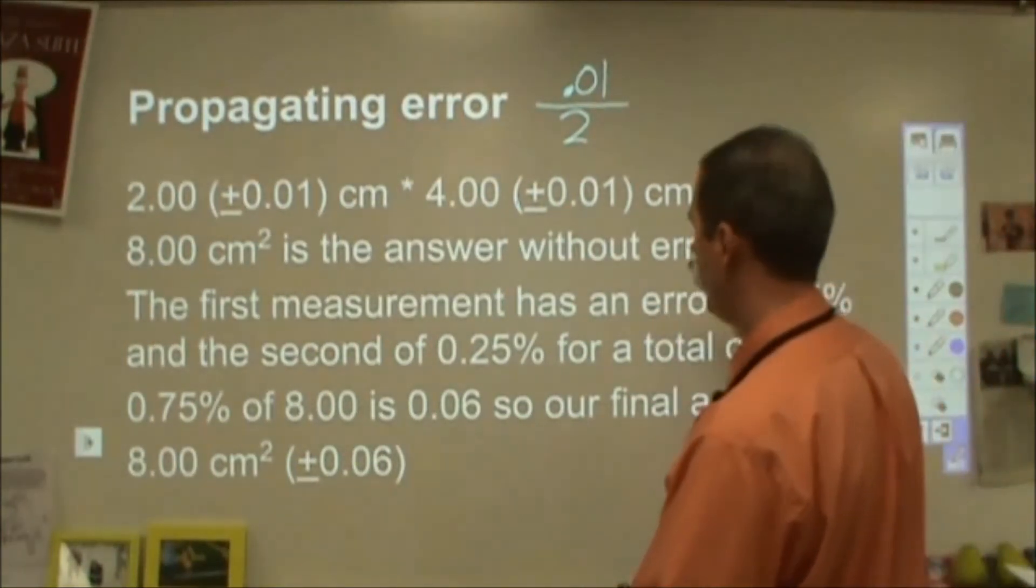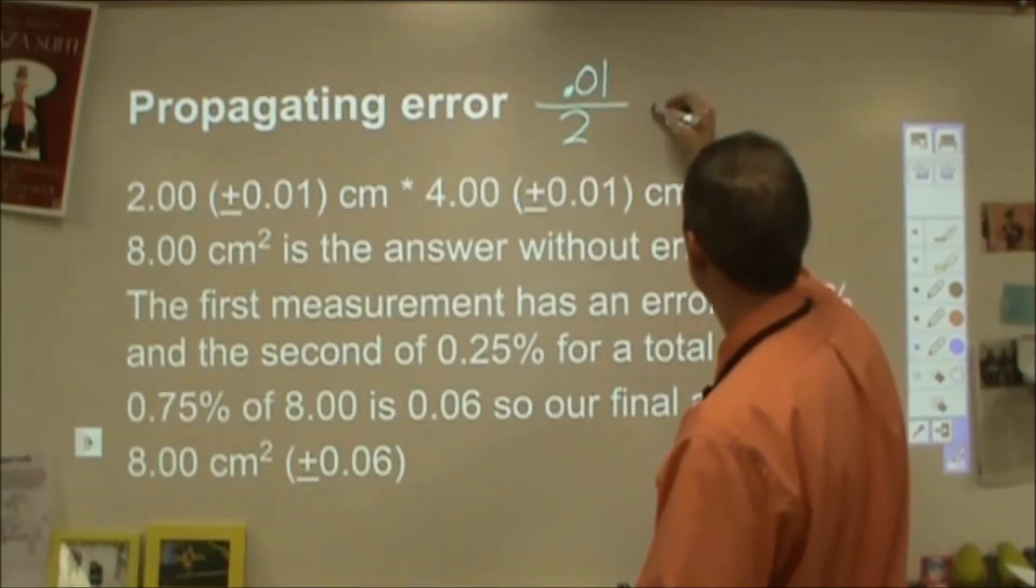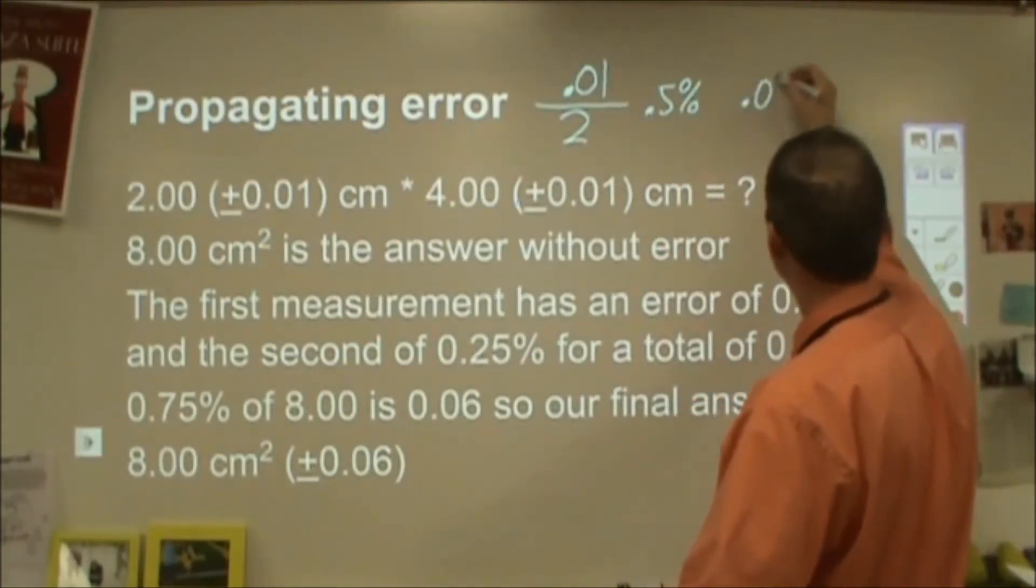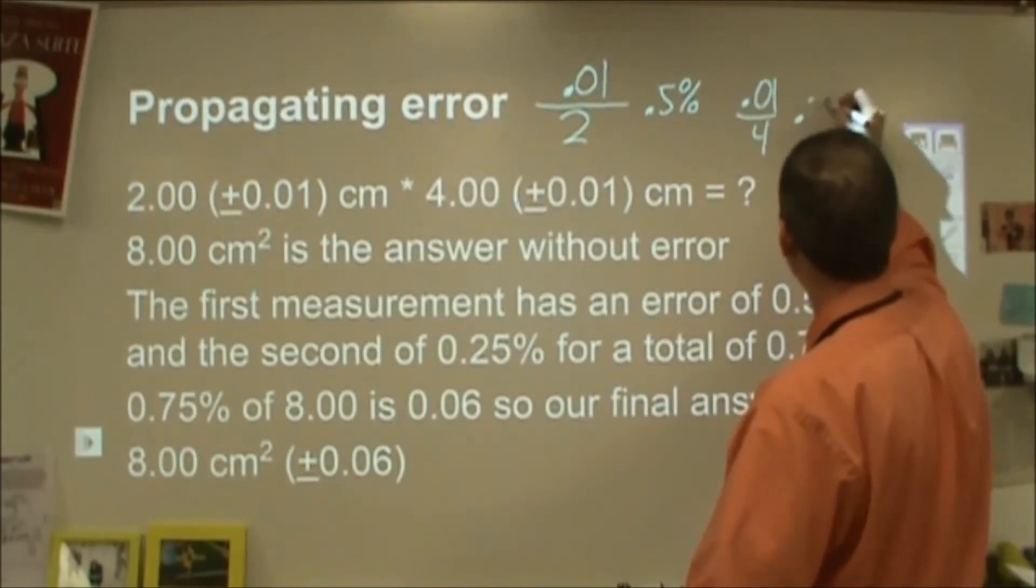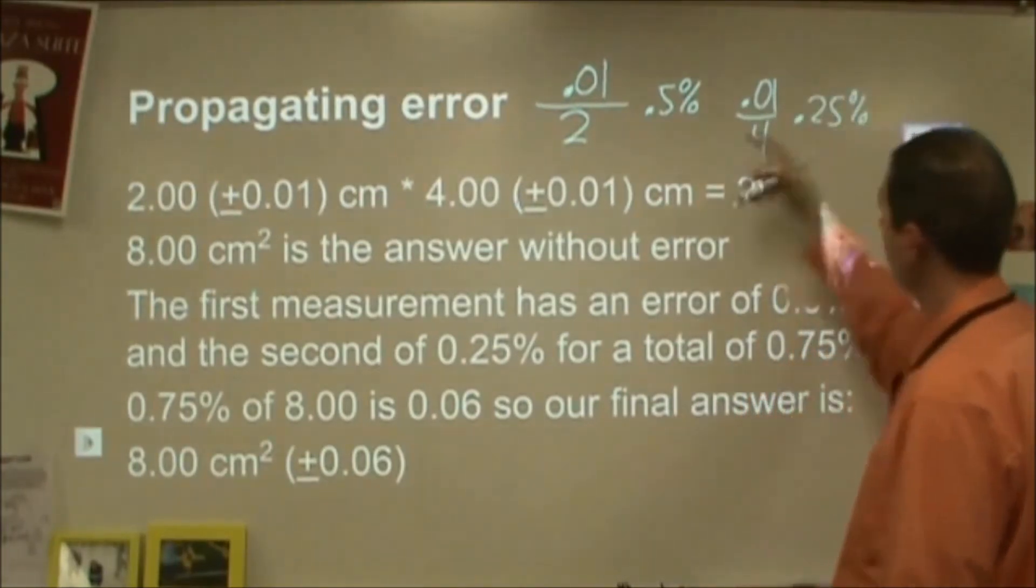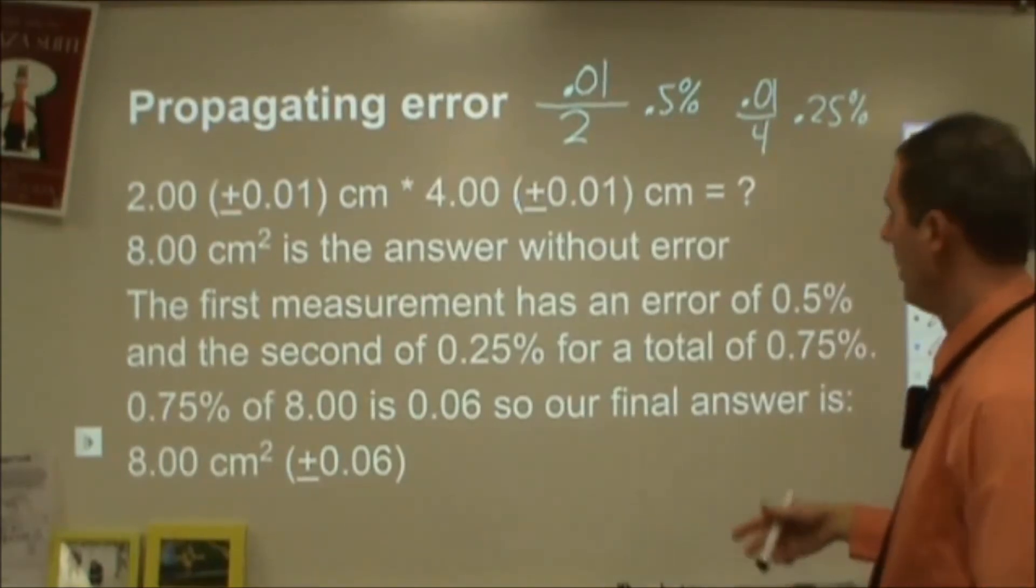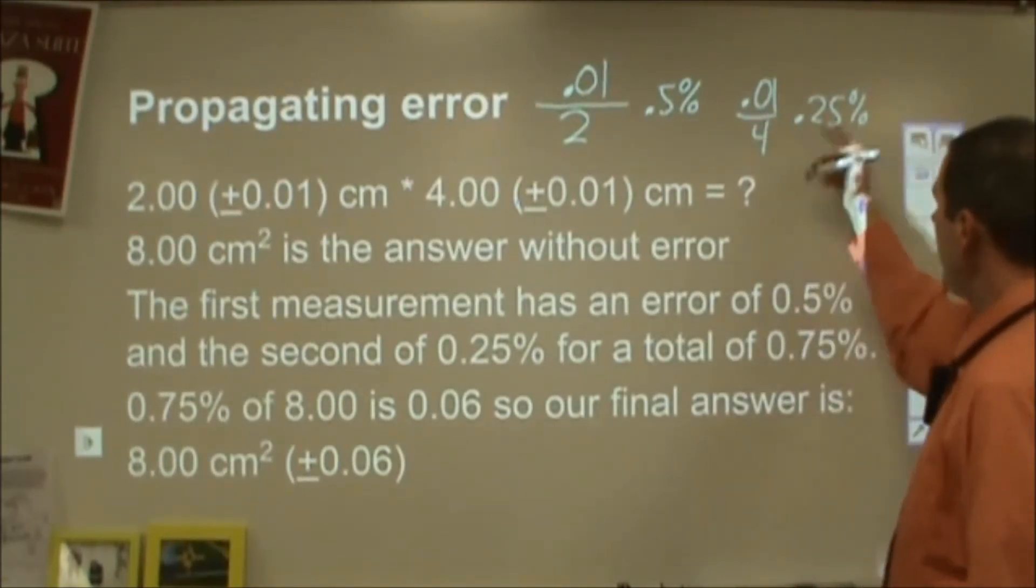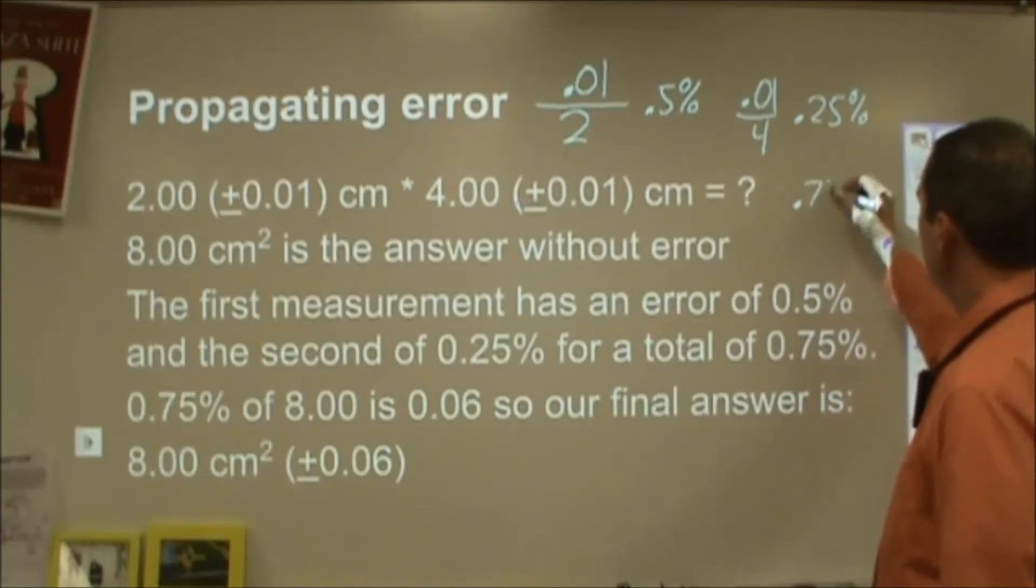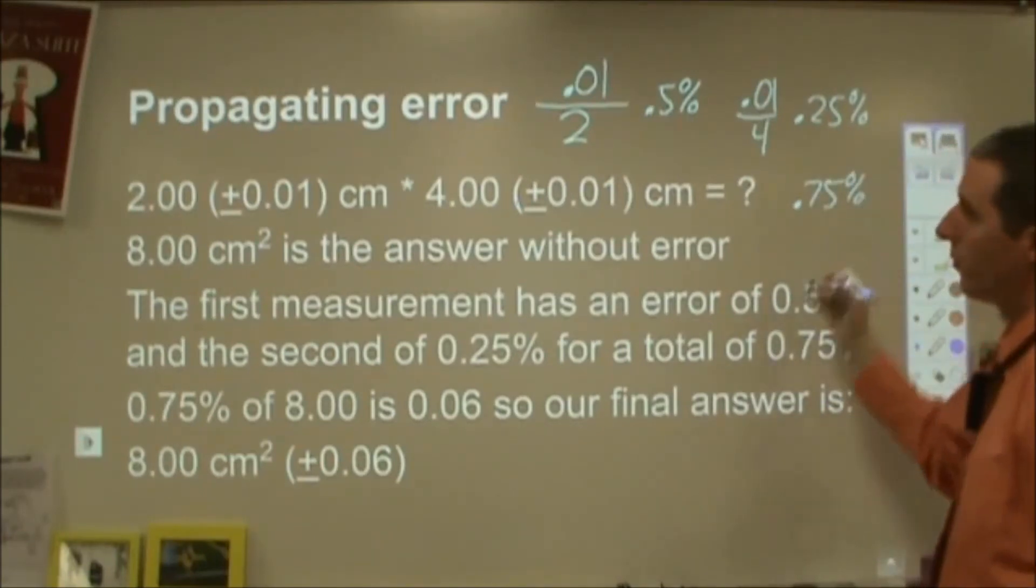So this one happens to be 0.5%. And then the other one is 0.01 divided by 4. That happens to be 0.25%. Now that's as a percent, so it's 0.005 and 0.0025. For your final answer, you add those two together. So now I would end up with 0.75% for my final answer.